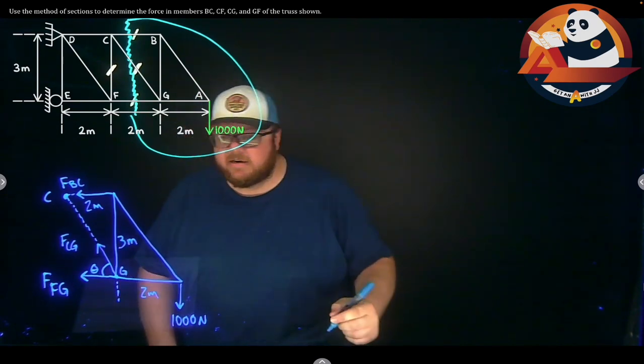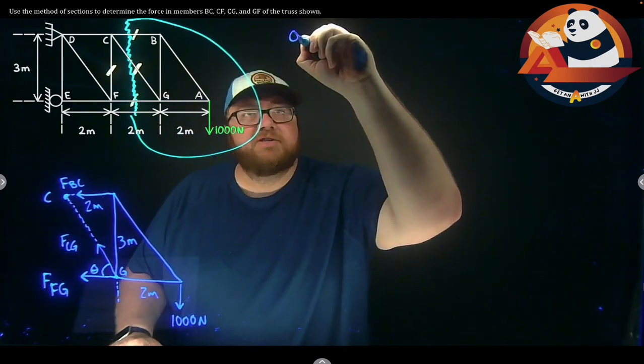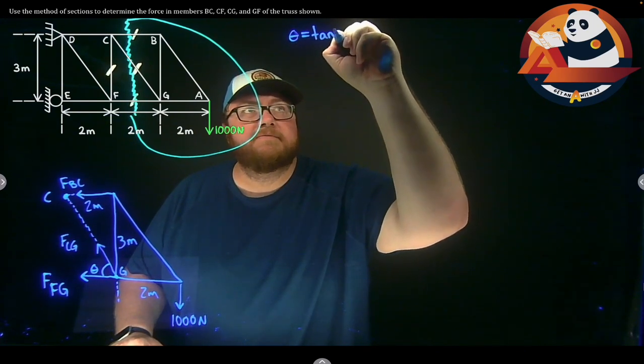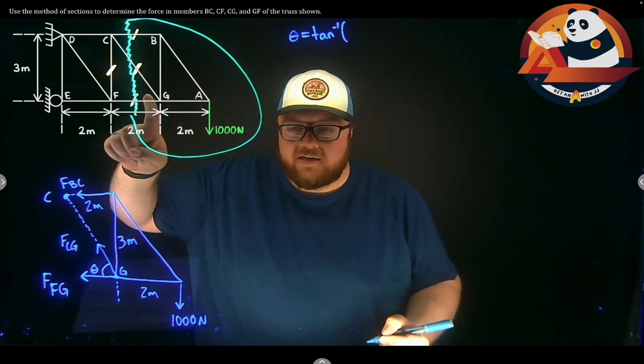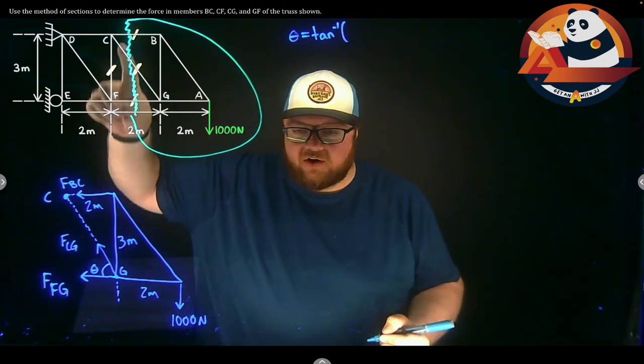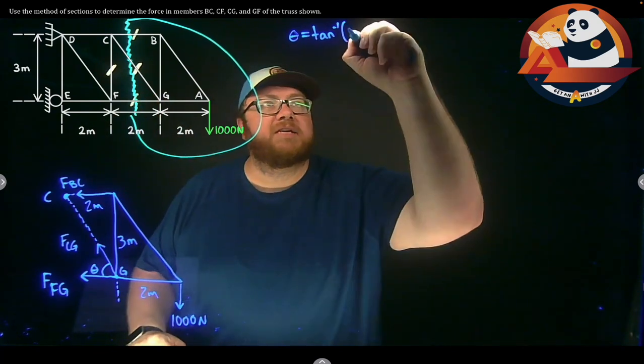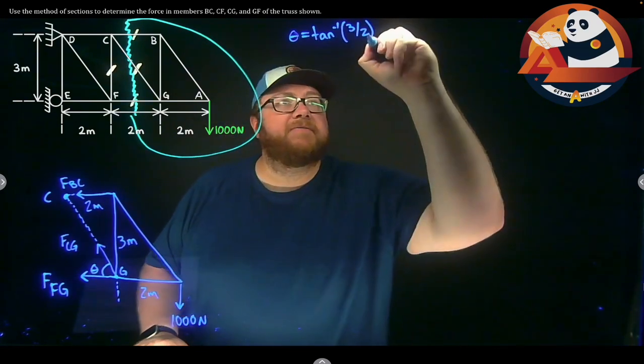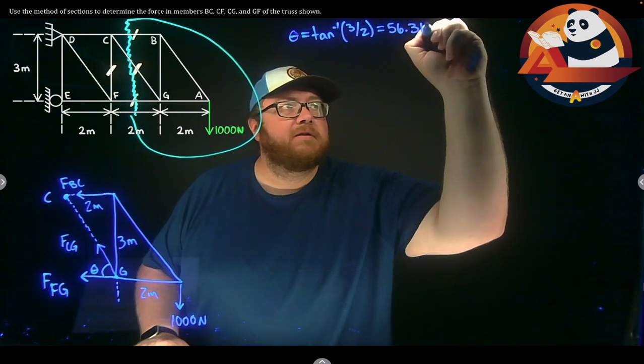The first thing I need, let's find theta. Theta I would get, just using some trig, theta is the inverse tangent of, remember CG went opposite vertically three, adjacent horizontally two. So the inverse tangent of opposite three over adjacent two. This is going to get me 56.31 degrees.